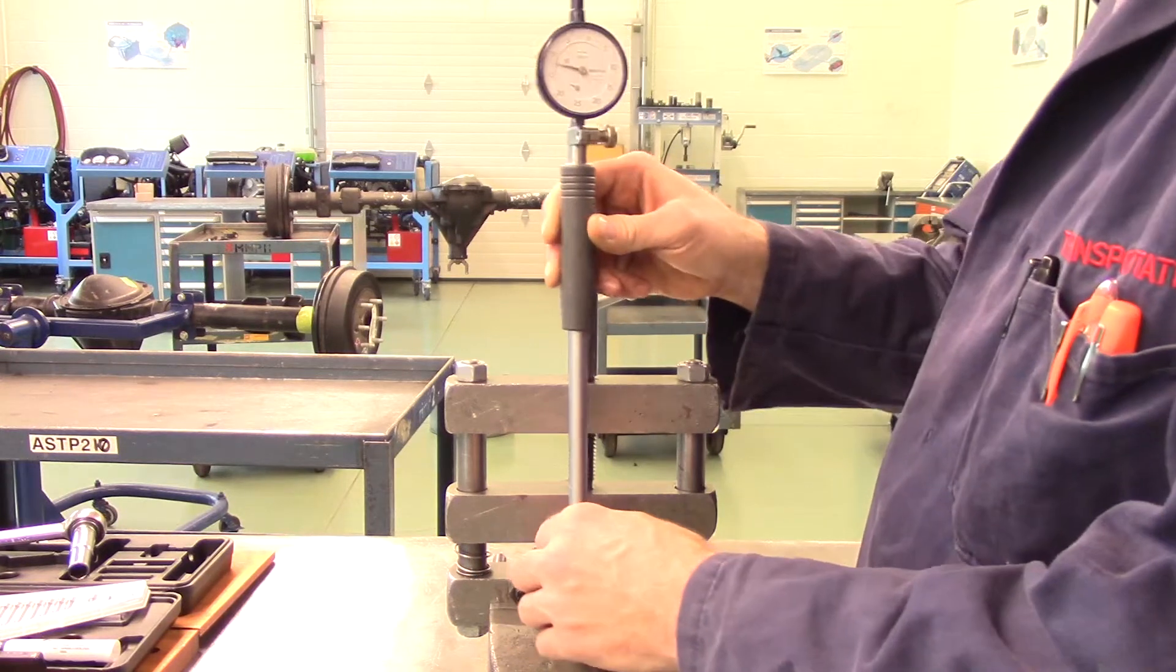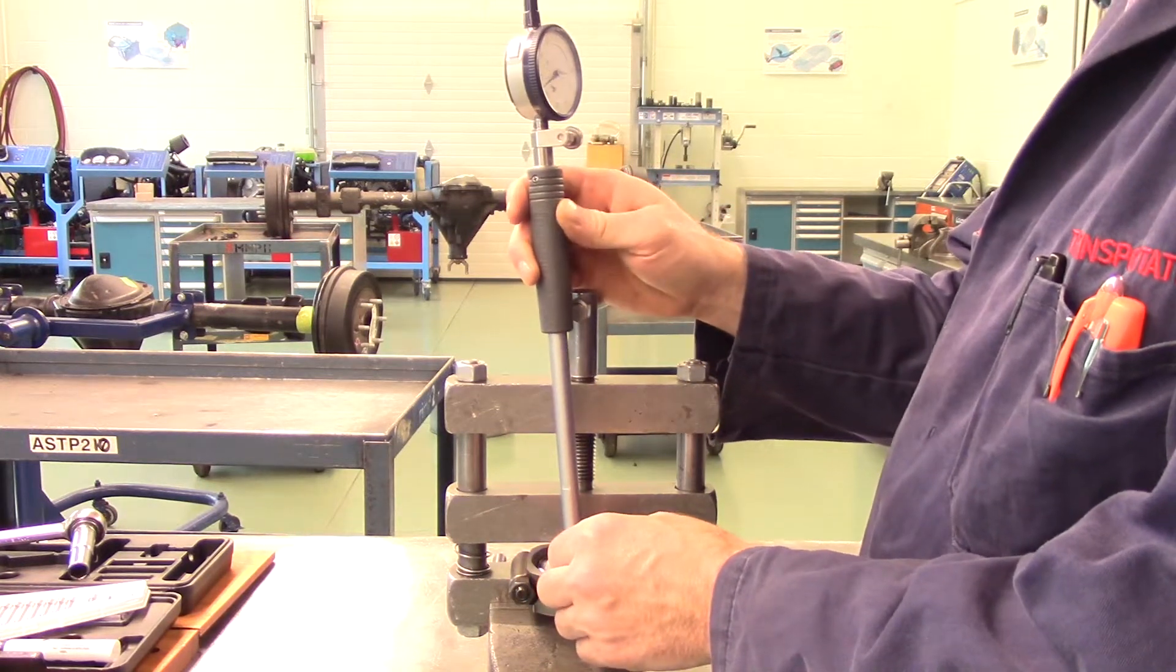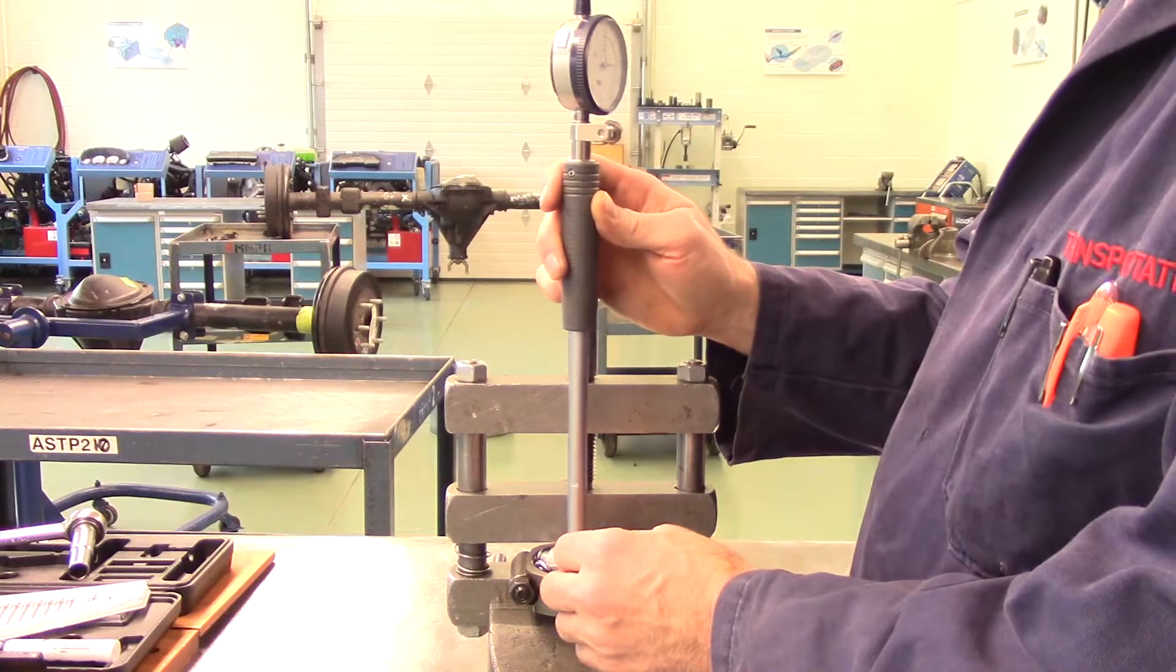For out of round, you will simply record the difference between the largest and smallest measurements taken in the previous step.